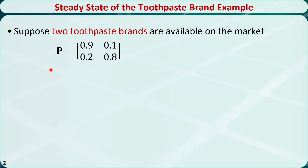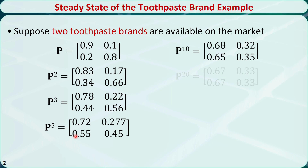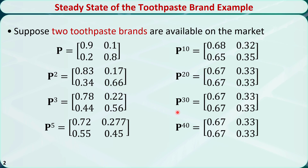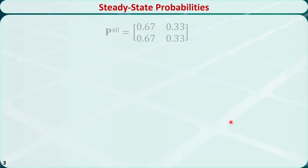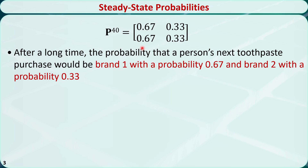For two-step transitions, this is the transition matrix P to the power of 2. Let's continue to increase the value of n. We find that after n is greater than or equal to 20, there is little change in the transition probabilities. It means after a long time, the probability that a person's next toothpaste purchase would be brand 1 is 67%, and the probability it would be brand 2 is 33%.